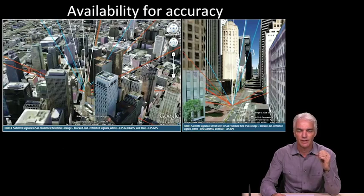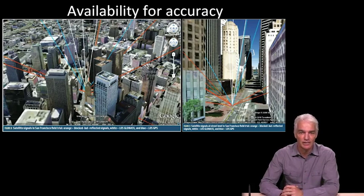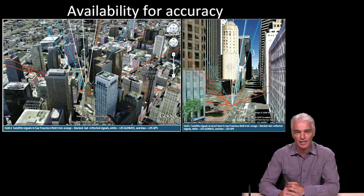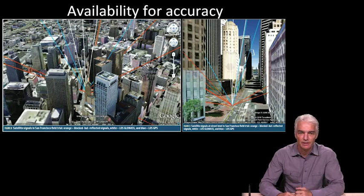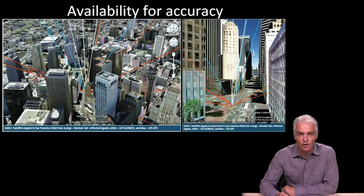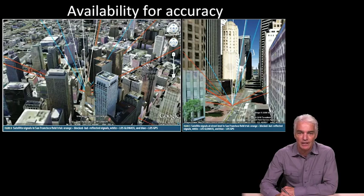One is we want higher availability of signals because that gives us better accuracy. And what I'm talking about is in places like this, in an urban canyon, that's San Francisco. There are many places similar in the world, hundreds of cities like this, where the signals don't reach you by direct line of sight. And what we're showing here are actual lines between a real receiver that was operating in San Francisco and the positions of the satellites up in space.